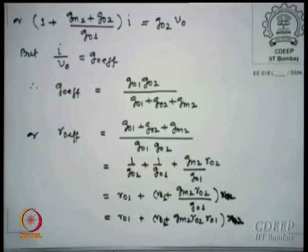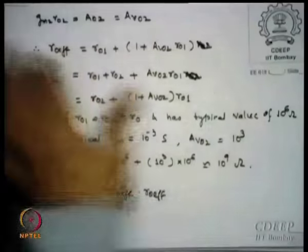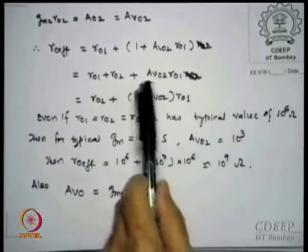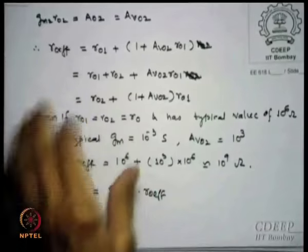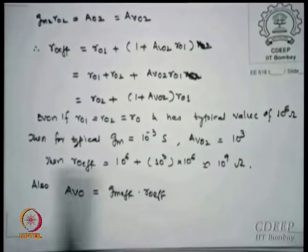So Ro_effective = Ro1 + Ro2 + gm2 × Ro2 × Ro1. Since gm2 × Ro2 is the voltage gain of the second stage Avo2, this becomes Ro_effective ≈ Avo2 × Ro1 (when Ro1 = Ro2 and dominant term). Since gains can be 100 to 1,000,000, and Ro is on the order of megaohms, the output resistance can go from megaohms to gigaohms. The output resistance of the cascode is boosted by Avo2, so the overall gain Gm_eff × Ro_eff increases proportionally.